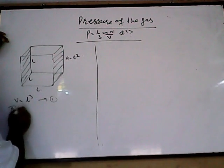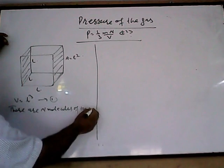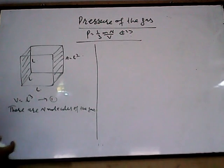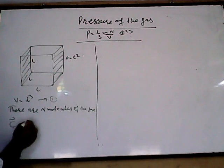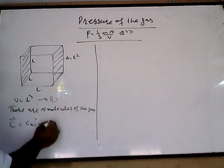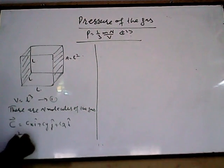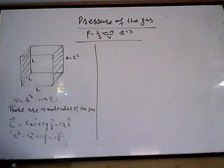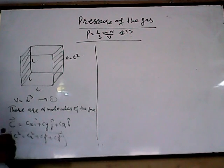Suppose there are N molecules of the gas. Each molecule has a different velocity — that is the first postulate. For one molecule with velocity c, it can be resolved into three components along x, y, and z. So c = cx·i + cy·j + cz·k. The square of the speed is therefore c² = cx² + cy² + cz² — this is equation number two.